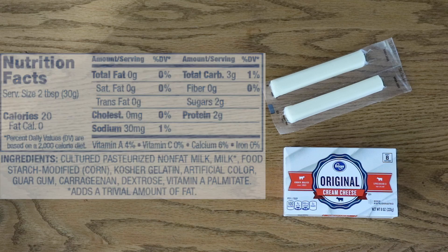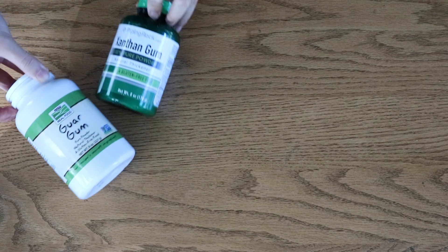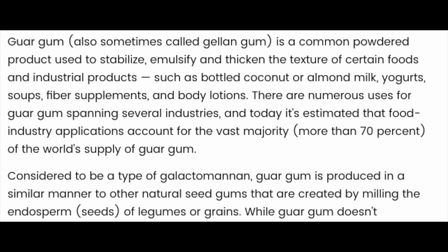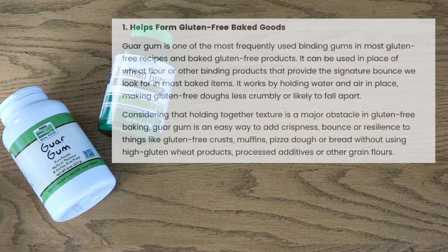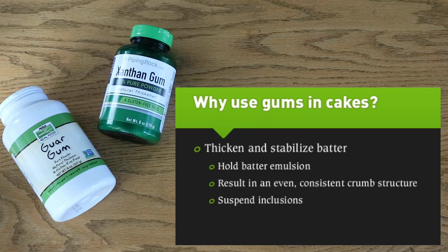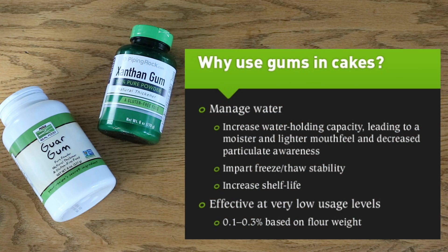Most commercial cream cheeses have thickeners added like guar gum, xanthan gum, and carrageenan — and that is probably why non-dairy cream cheese can still have the same effect in baking. Xanthan gum is produced by fermenting different carbs. Guar gum is similar — it also stabilizes, emulsifies, and thickens just like xanthan gum, but it is weaker. If you used one teaspoon of xanthan gum in a recipe, you would sub in two teaspoons of guar gum. Guar is made from grinding down a guar bean. These gums do a lot of the same things that gluten does: they provide structure and chew, hold things together, reduce crumbliness, and overall improve texture.